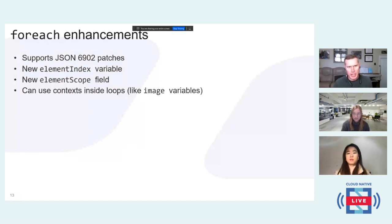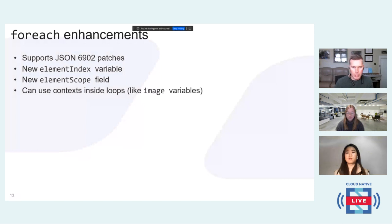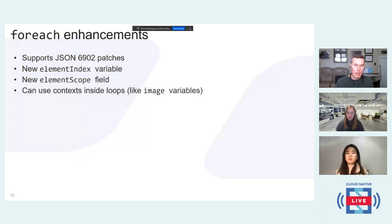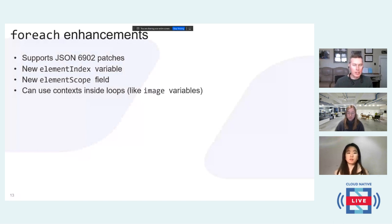For each enhancements in 1.6: for each is an ability in Kyverno to allow you to loop over objects in an array. Coming in 1.6 is the ability to use JSON 6902 patches to loop through objects in a for loop and do things like specific removes — strategic merge gives you a customized-style patch but with JSON 6902 patches you can do specific removes. There's also an element index variable allowing you to refer to specific indexes being operated on. Element scope allows you to look at the high-level object or field in a resource, and if you need to operate outside of that you can set the elementScope field to pick and refer to any other field in that resource. Context loops are also now supported inside of a forEach loop.